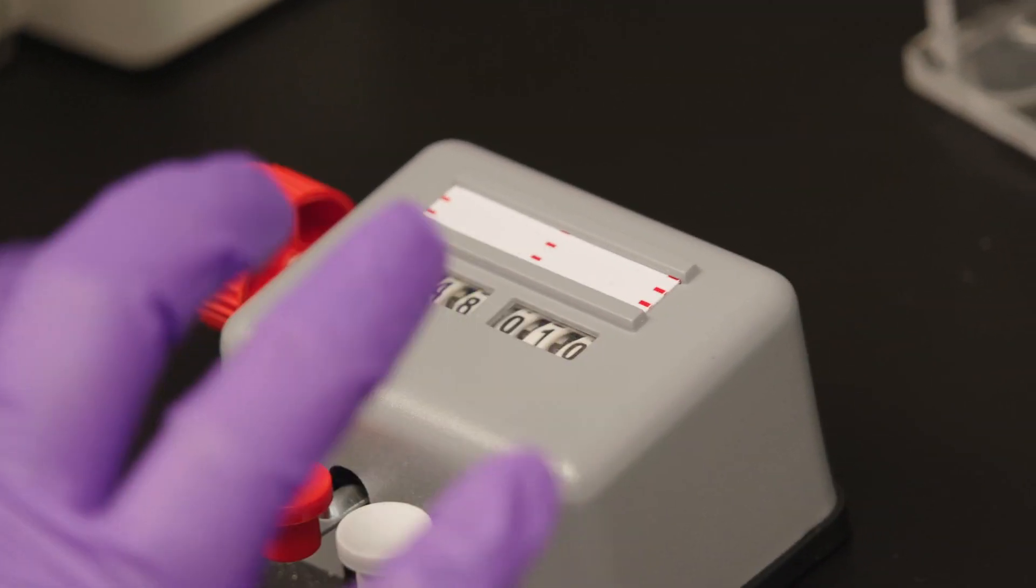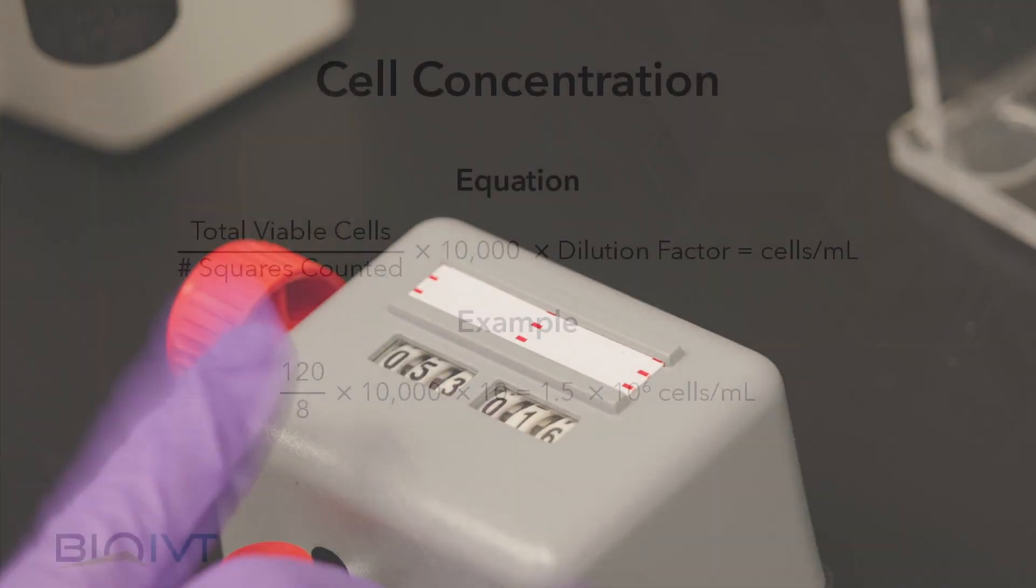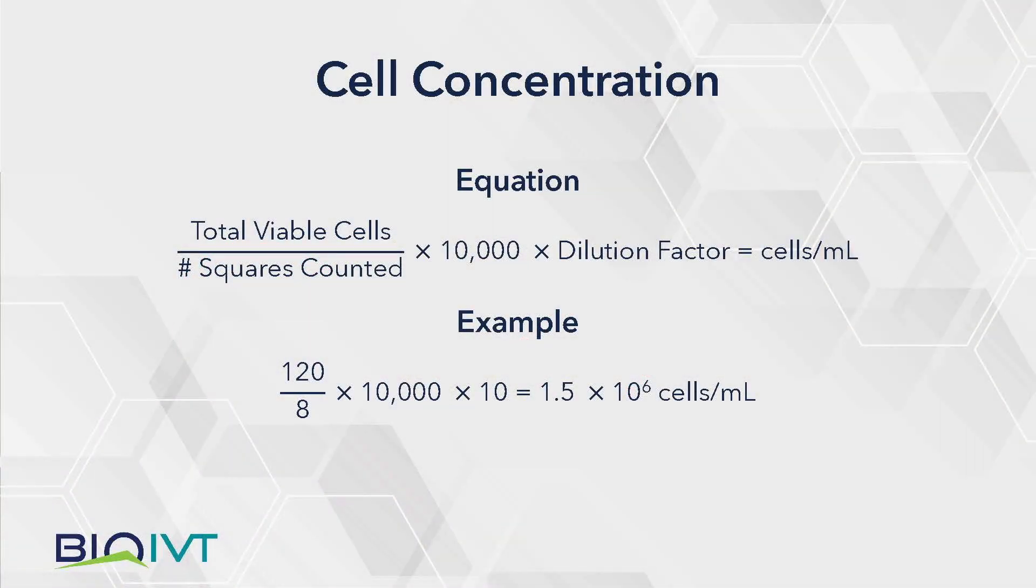After cell counting is completed, determine the total cell concentration. The first step in determining cell concentration is to divide the total number of viable cells by the total number of squares counted. In this example, there were eight squares counted.